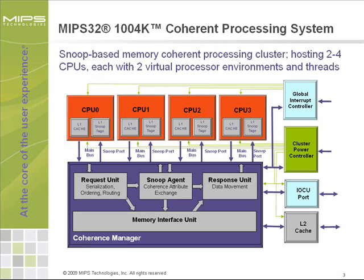The MIPS 104K coherent processing system consists of two to four microprocessors, each having two independent threads as virtual CPU environments. As such, up to eight independent hardware threads can be executed at a time. If required, these CPUs will operate within one common address space and their L1 caches will be held coherent throughout the system. L1 cache coherence is facilitated through a cluster-central communication fabric dubbed the coherence manager. A MESI-style snoop-based coherence scheme has been implemented. To ensure parallel operation between CPU load/stores and coherence snoop traffic, L1 cache tag RAMs have been duplicated.